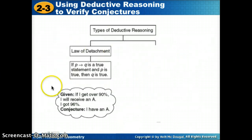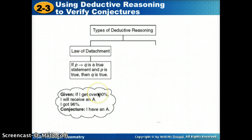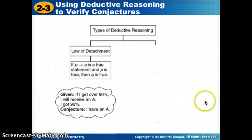Here's a good example. If I get over 90%, I will receive an A. I got 96%. Notice this is a true conditional statement, and our next statement confirms the hypothesis is true. So what can we conclude? We can say the conclusion is true. If you have a true conditional and a true hypothesis, you can conclude that the conclusion is true.